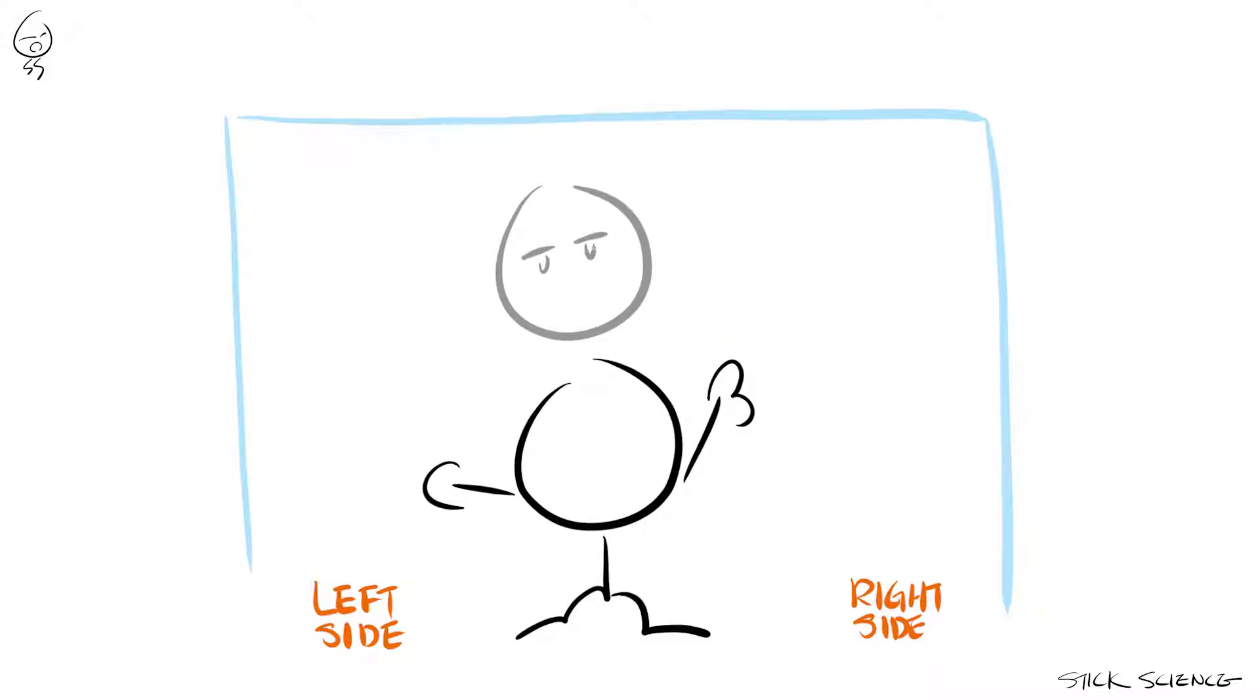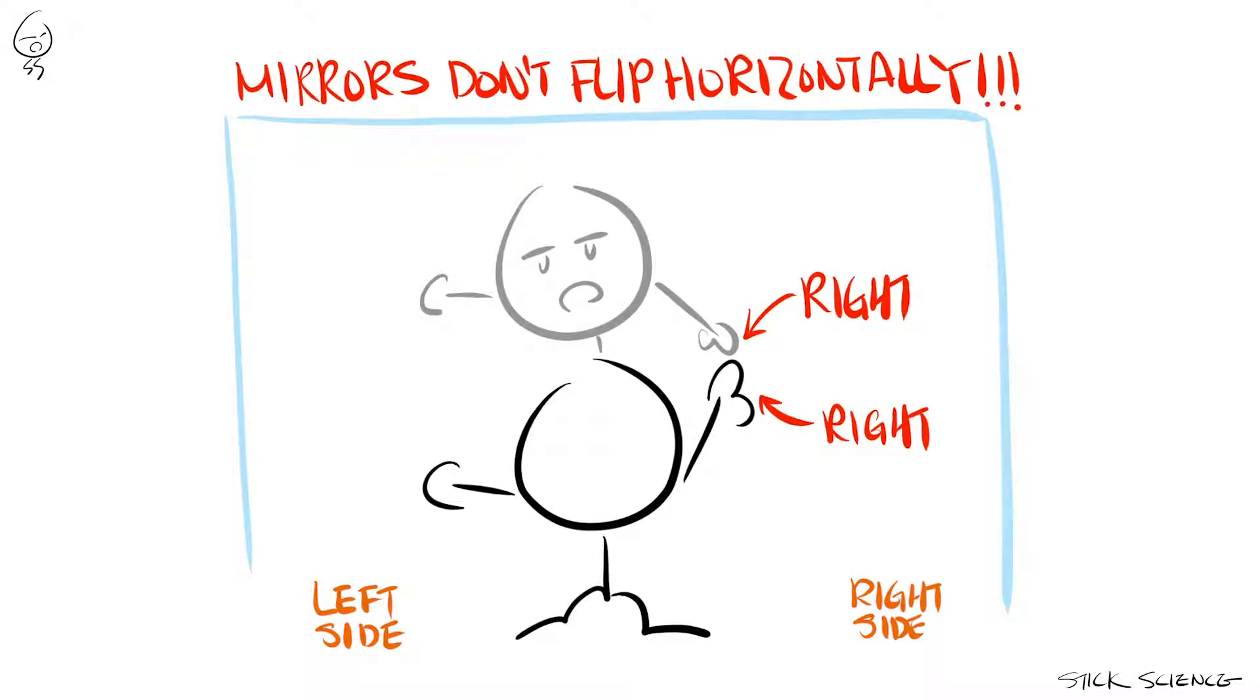What you see is your mirrored image touching the right side of the mirror with what appears to be the left hand. Of course what it's really doing is touching the right side of the mirror with its right hand. There's no horizontal flip at all.